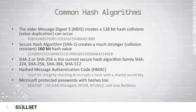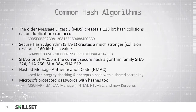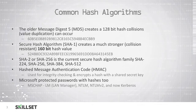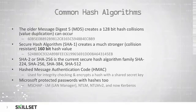SHA2, also known as SHA256, is currently considered to be the minimum standard for a secure hashing algorithm. We also have SHA384 and SHA512. As the strength of the hashing algorithm increases, so does the overhead. It would take significantly longer to generate a SHA512 hash value than it would an MD5.